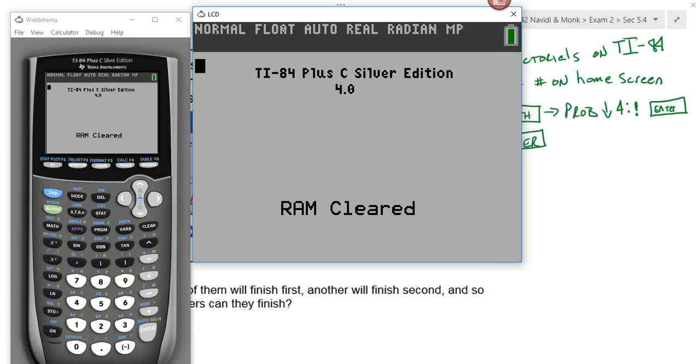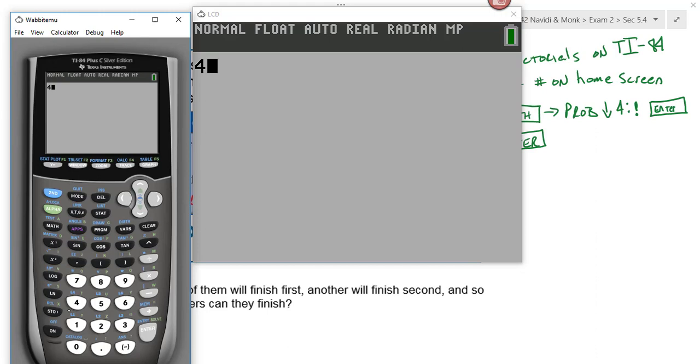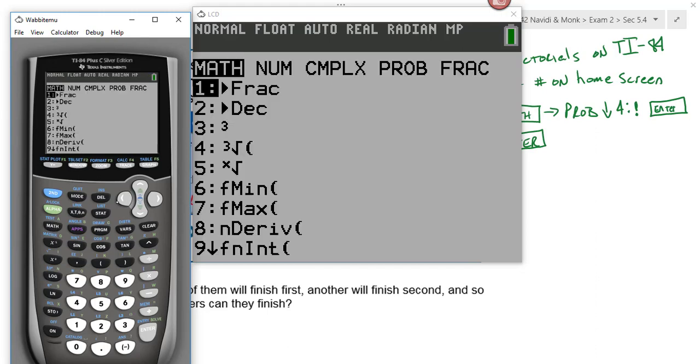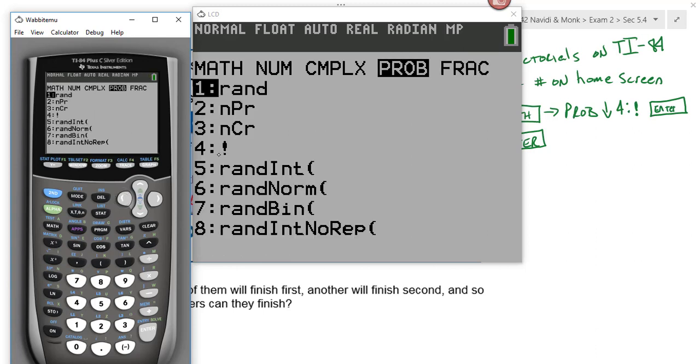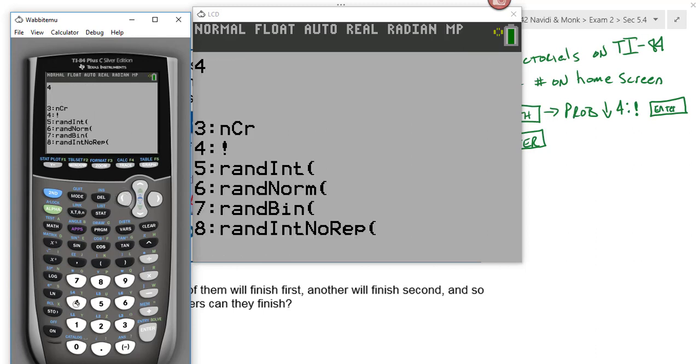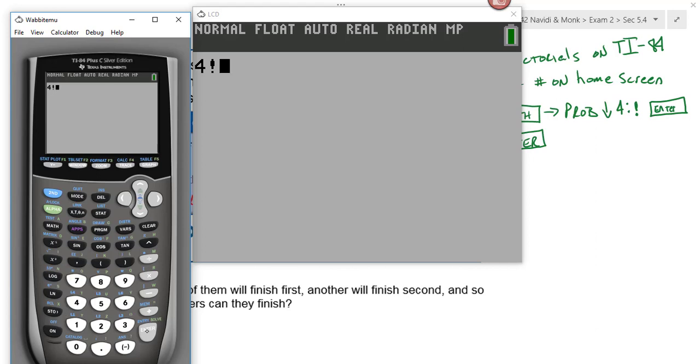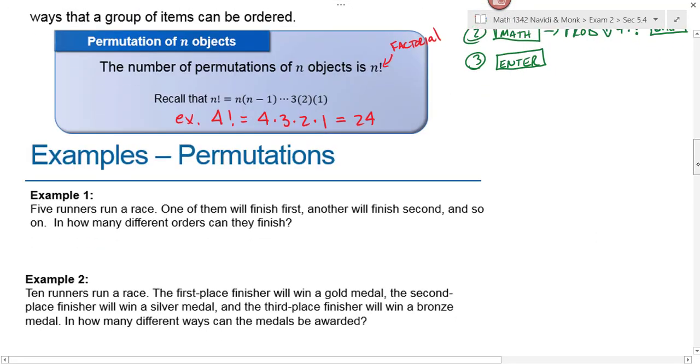So following these steps, we would put 4 on our home screen. Then we hit math—that's this button right here. Go over to probability, and then number 4 is the factorial. I'm just going to hit 4 instead of entering. And then you hit enter and we see that we were right. 4 factorial is indeed 24. All right, let's use our calculator then to work some problems.